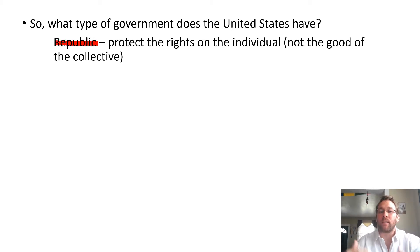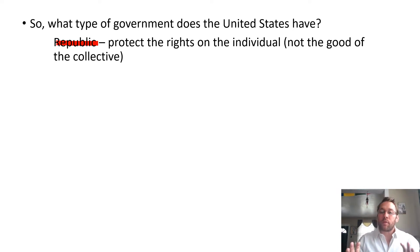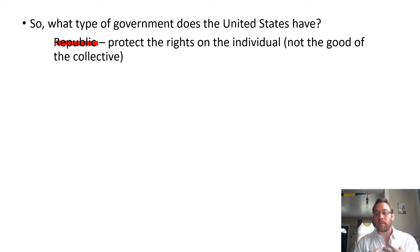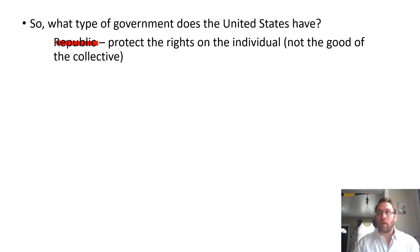A republic protects the rights of the individual first and foremost above the rights of whatever people might vote for. When people say 'democratic republic,' they mean that democratically we vote our leaders into office — our senators, House of Representatives members, presidents, mayors, governors. But their primary duty is to protect individual rights.